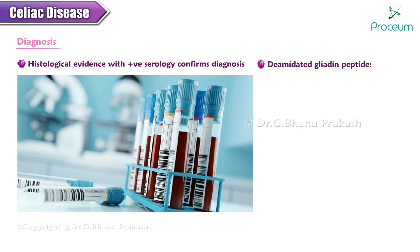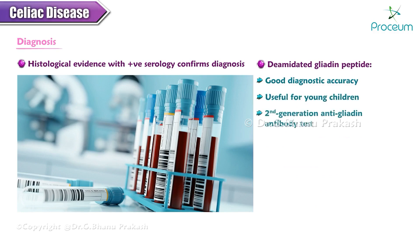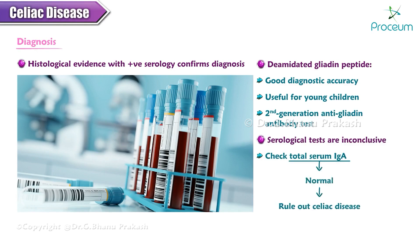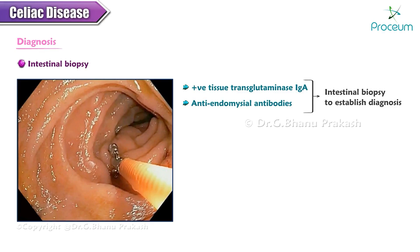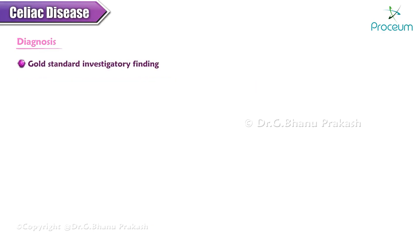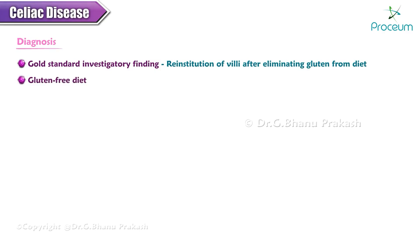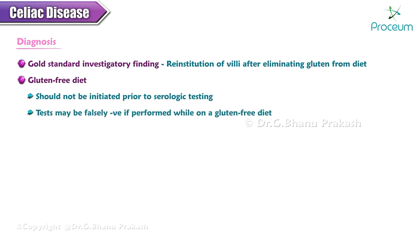The deaminated anti-gliadin peptide test also has good diagnostic accuracy and may be particularly useful for young children; it is a second-generation anti-gliadin antibody test. If serological tests are inconclusive, total serum immunoglobulin A must be checked — if normal, one can rule out celiac disease. Individuals with positive IgA tissue transglutaminase or anti-endomyseal antibodies should undergo intestinal biopsy to establish the diagnosis. The gold standard investigatory finding is reinstitution of villi after eliminating gluten from the diet. A gluten-free diet should not be initiated prior to serologic testing, as these tests may be falsely negative if performed while on a gluten-free diet.